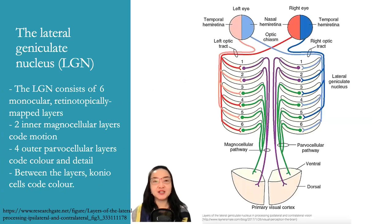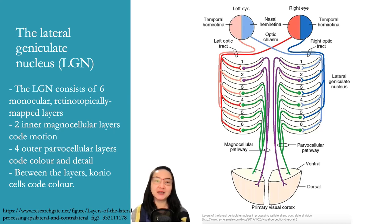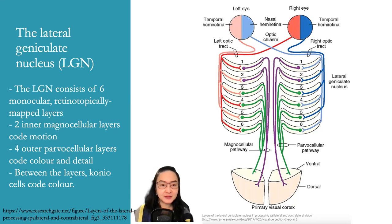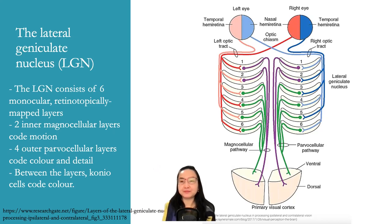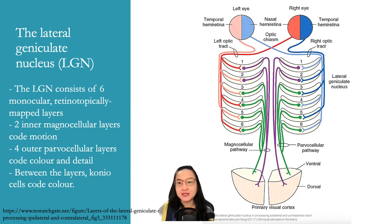The lateral geniculate nucleus (LGN) consists of six monocular retinotopically mapped layers: two inner magnocellular layers, called motion, and four outer parvocellular layers, called color and detail. Within the layers there are also koniocellular cells, associated with color. You can see the six layers on the left and right side in the picture.